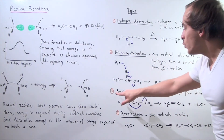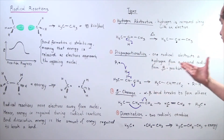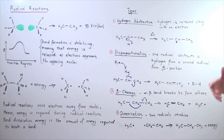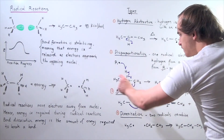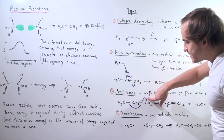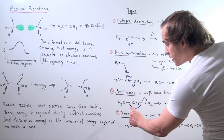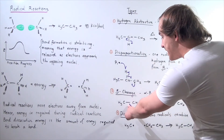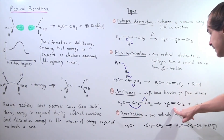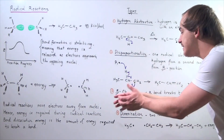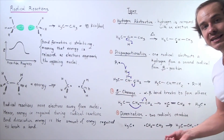The third type is the beta cleavage radical reaction. In this reaction, the alpha-beta bond breaks to form an alkene and a radical. Using the same molecule as above, the single non-bonding electron on the radical carbon forms a pi bond with the alpha carbon. The alpha-beta bond breaks, forming the pi bond, and the remaining fragment detaches to form a new radical. So beta cleavage produces an alkene and a radical.